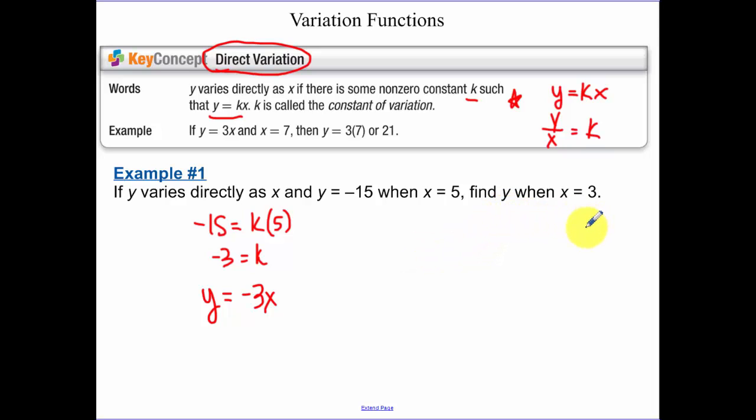We want to find y when x equals 3. So I need to find y when x equals 3. So that is going to be negative 9. What you could also do is use this equation here, where we have y over x. So we have negative 15 is to 5, as y is to 3, and we solve and you end up getting negative 9 that same way.